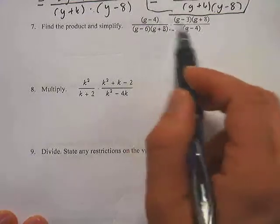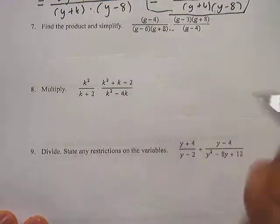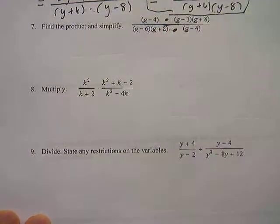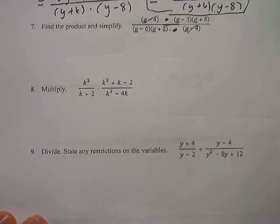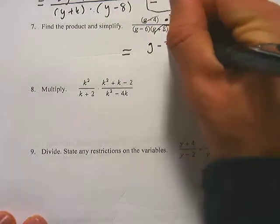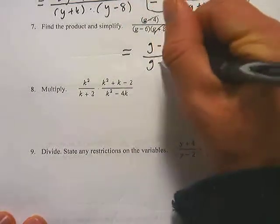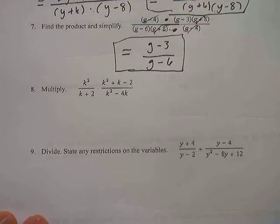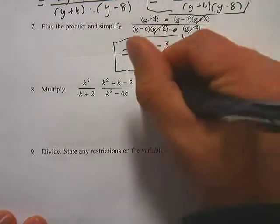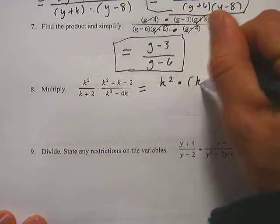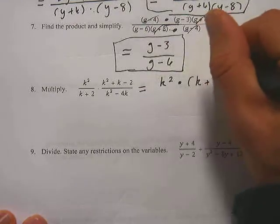Let's get to the easy stuff — multiplication and division. Addition and subtraction are substantially more difficult than multiplication and division. Multiplication is easy: if you multiply two fractions, you're simply multiplying straight across — putting them on the same fraction — and then you can start cancelling. I can cancel out the g minus 4 and the g plus 8, and the only things that remain are g minus 3 on top and g minus 6 on the bottom, which is your answer.